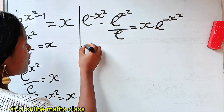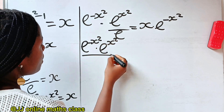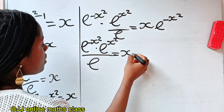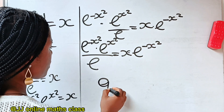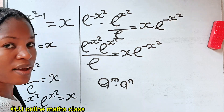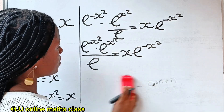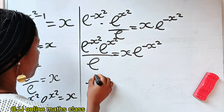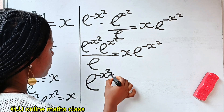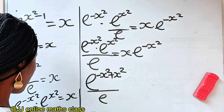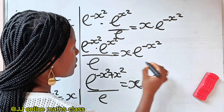This is the same thing as e to the power of minus x squared multiplied by e to the power of x squared over e, equal to x multiplied by e to the power of minus x squared. When you have a to the power of m multiplied by a to the power of n, it equals a to the power of m plus n. Since they share the same base, we pick one base and add the powers: minus x squared plus x squared divided by e is equal to x times e to the power of minus x squared.